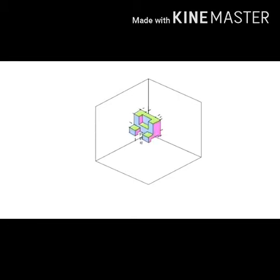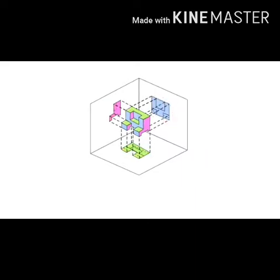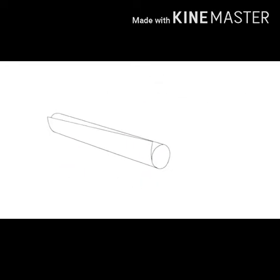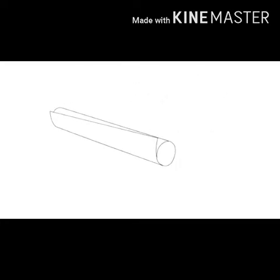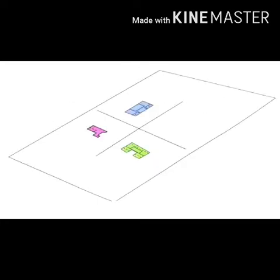Engineering drawing is a type of technical drawing which is used to clearly define the requirements for engineered items such as views, dimensions and necessary information. More than drawing pictures, it is also a language — a graphical language that communicates ideas and information from one mind to another. Most importantly, it communicates all needed information from the engineer who designed a part to the worker who will make it.